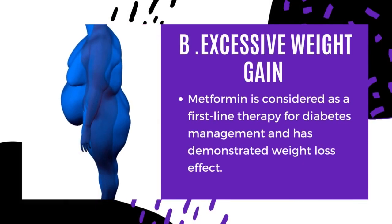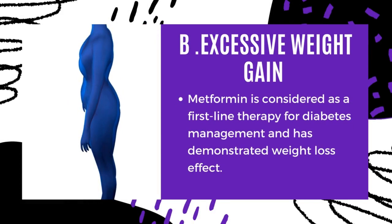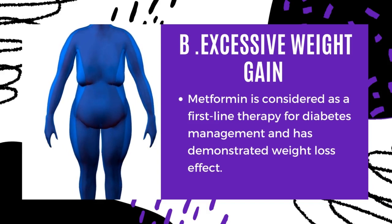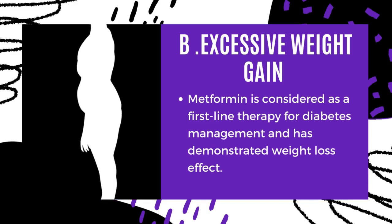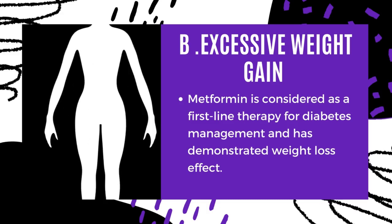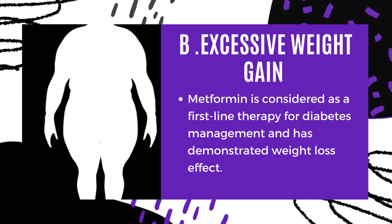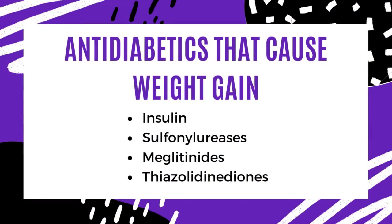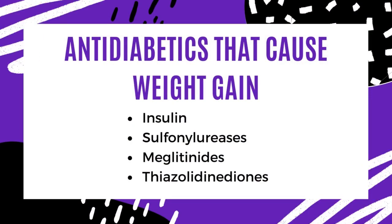Option B is excessive weight gain. Metformin is widely used and considered a first-line therapy for diabetes management. It is an insulin sensitizer that decreases free fatty acid release from adipose tissue, decreases hepatic glucose output, and intestinal glucose absorption, and has consistently demonstrated a weight loss effect. Major therapeutic classes like insulin, sulfonylureas, meglitinide derivatives, and thiazolidinediones have been associated with weight gain.